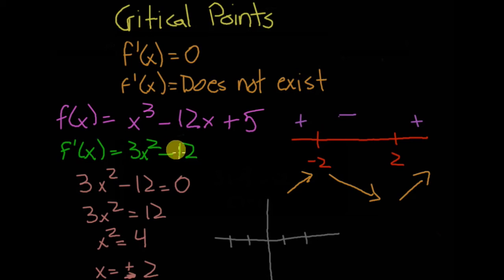If you plug negative two into the original equation, you get (-2)³ which is negative eight, plus negative 12 times negative two which is 24, so you have negative eight plus 24 plus 5.